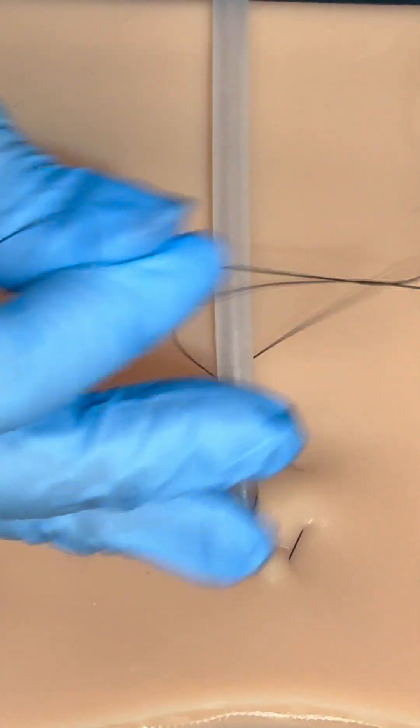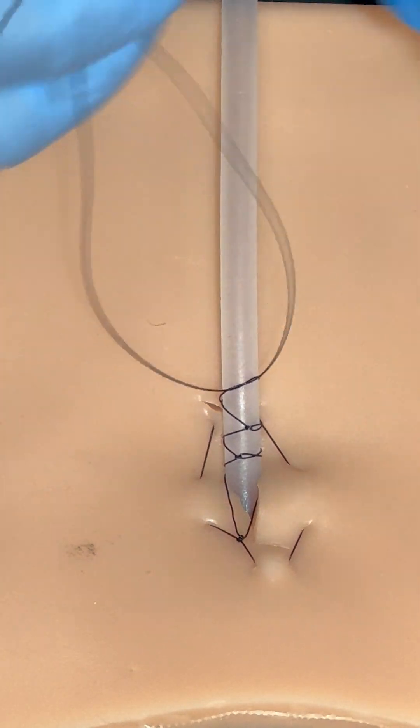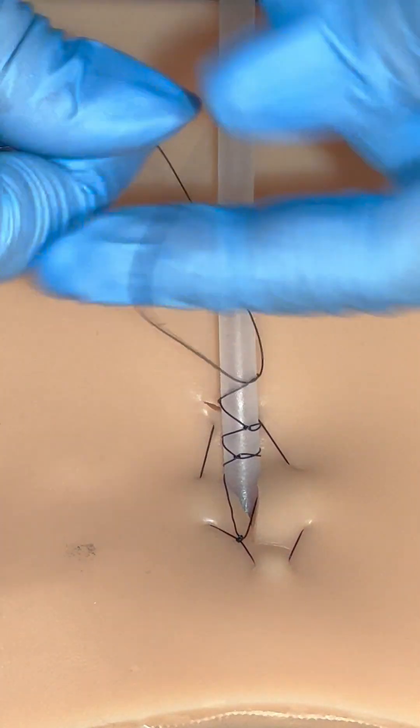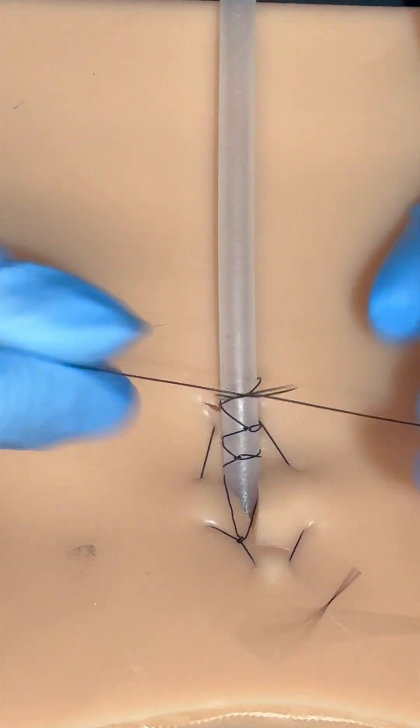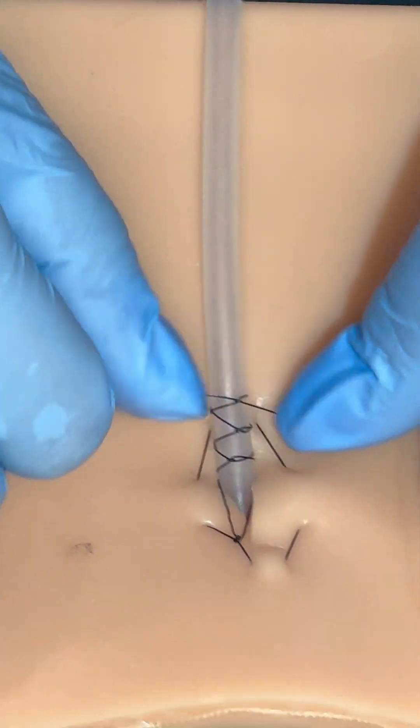This tube should be pretty secure. It's attached to the patient, and additionally, there's a finger trap on it. And as always, the finger trap will have four to five total knots on it.